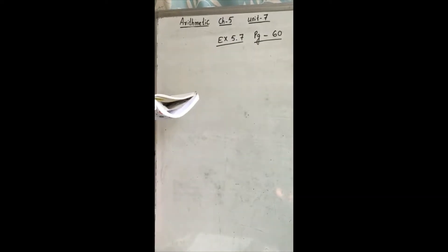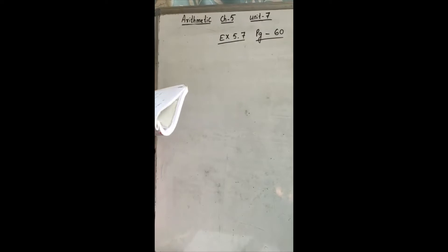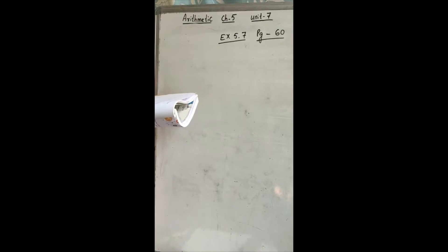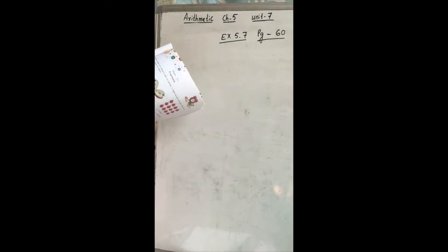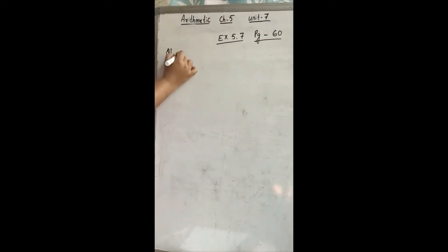Okay students, now open with me to exercise 5.7 page number 60. Let us read the first question. The HCF of two numbers is 15 and the LCM is 45. If one number is 25, find the other number. Now in the question, what is given?